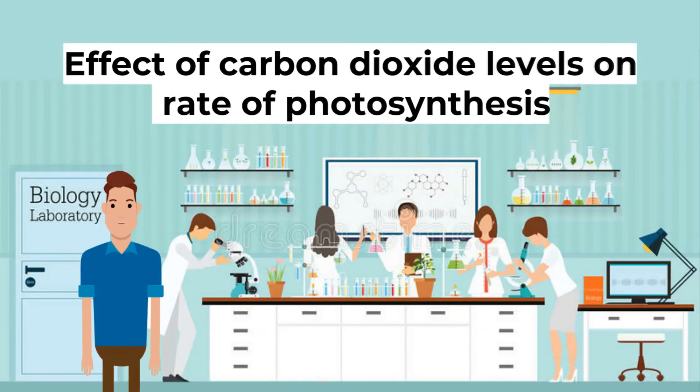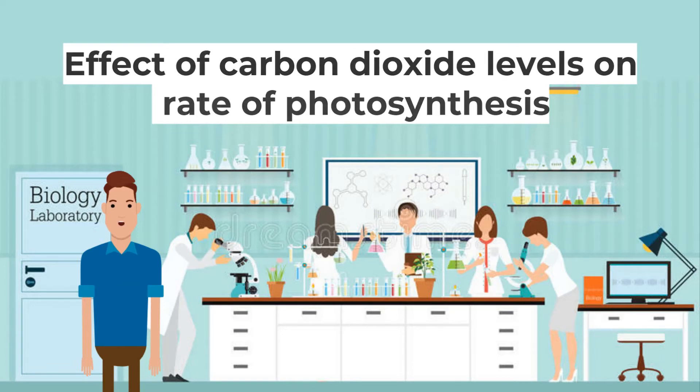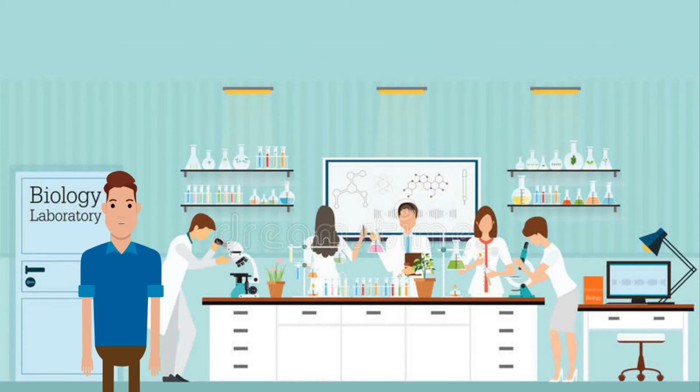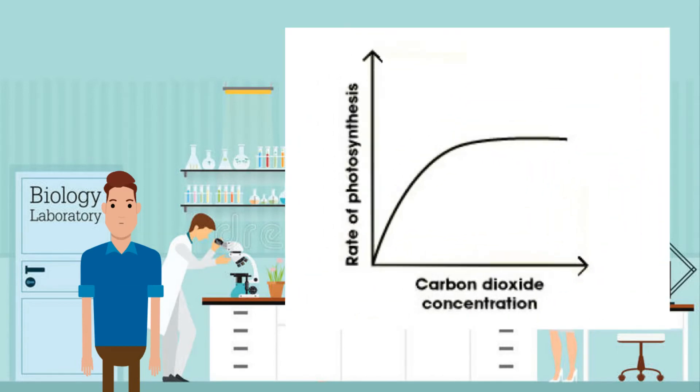Okay, how is the effect of carbon dioxide levels on the rate of photosynthesis? As carbon dioxide is one of the reactants of photosynthesis, the concentration of carbon dioxide directly affects the rate of photosynthesis. If the concentration of carbon dioxide is low, there is not enough carbon dioxide and carbon dioxide becomes the limiting factor of the reaction.